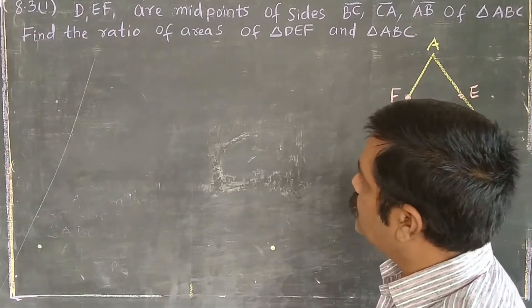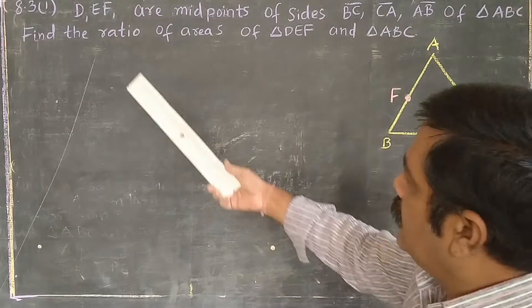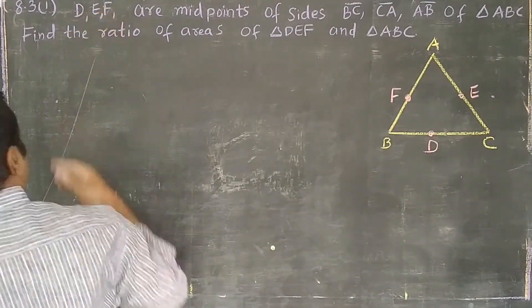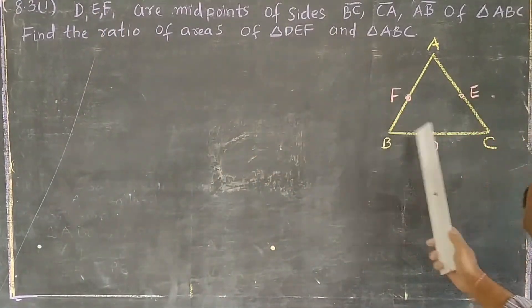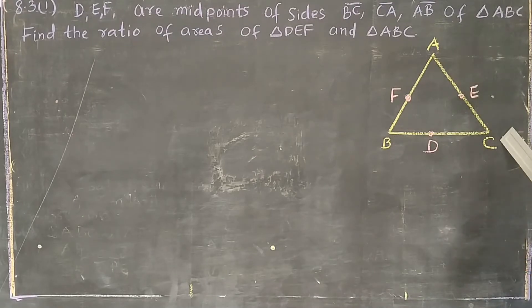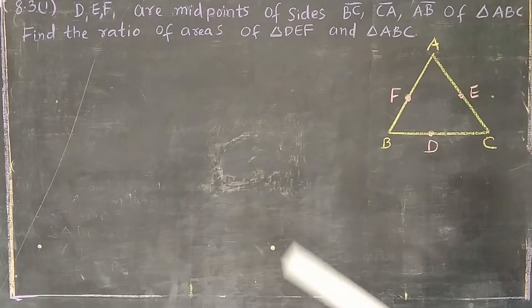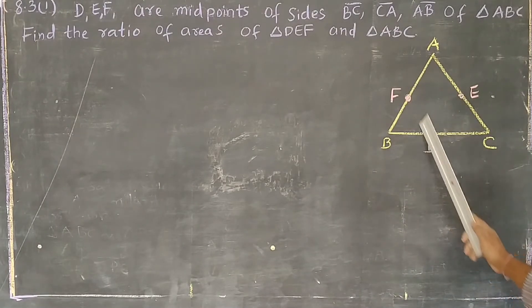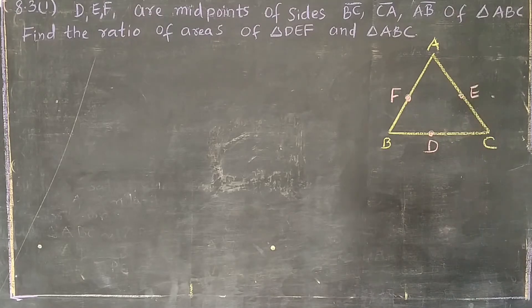Here we have question A23. D, E, F are midpoints of sides EC, CA, AB of triangle ABC. When I join this triangle, we get triangle DEF and triangle ABC.